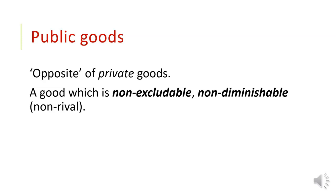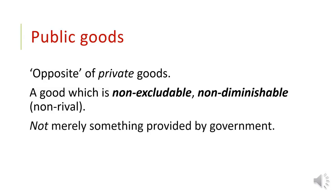So this is a good where, if it is supplied or comes into existence, no one can be excluded from enjoying the benefits of it. And also, as more people use an existing public good, that good doesn't diminish in quantity with use. It's not merely something which is provided by the government — that's not what we mean by a public good. Our definition of a public good is this technical definition of something which is non-excludable and non-diminishable.